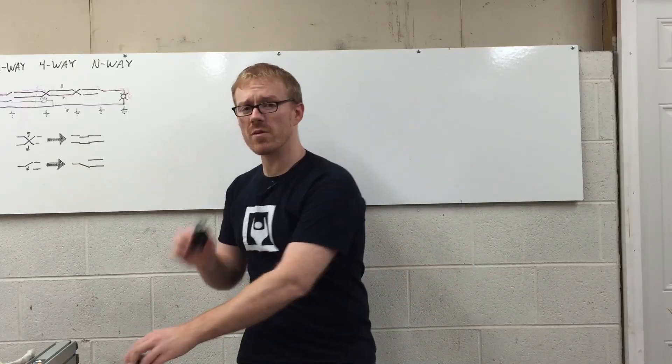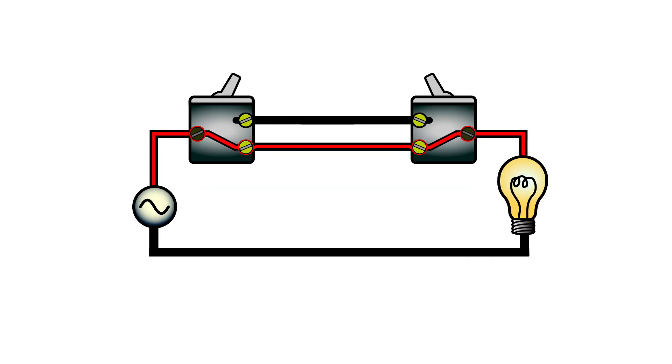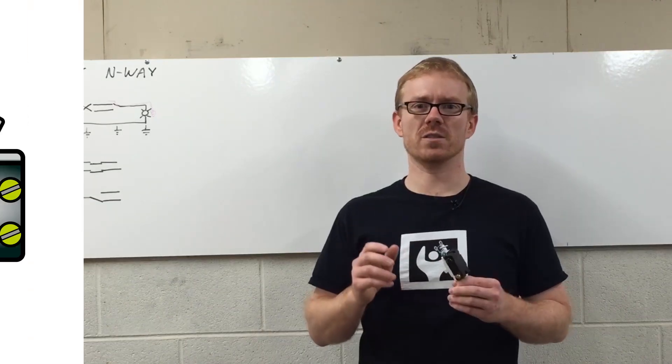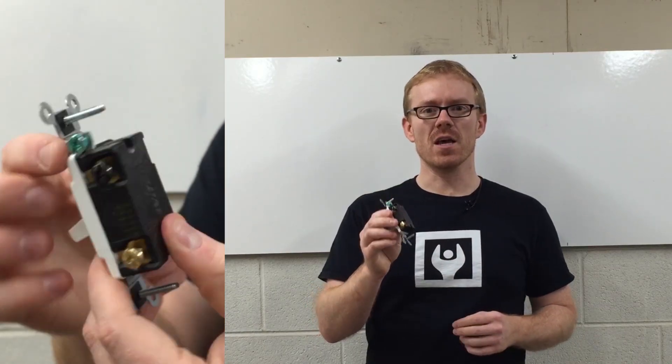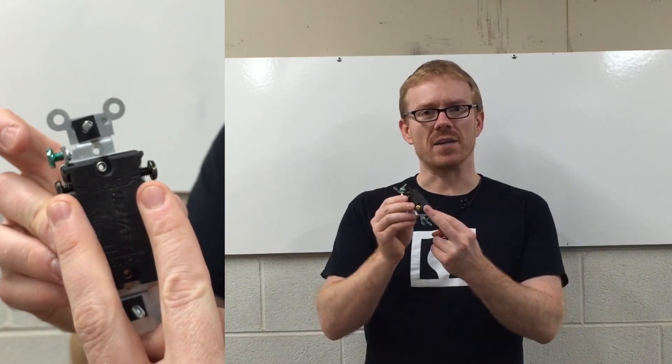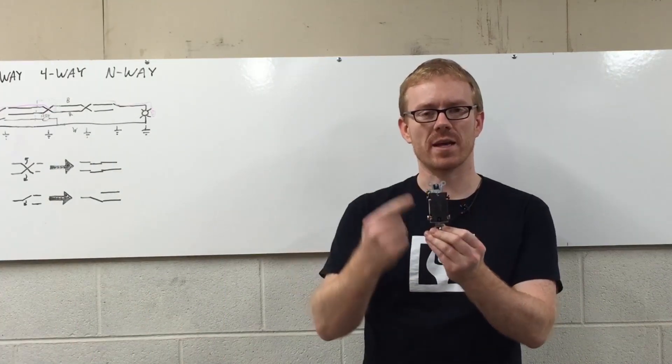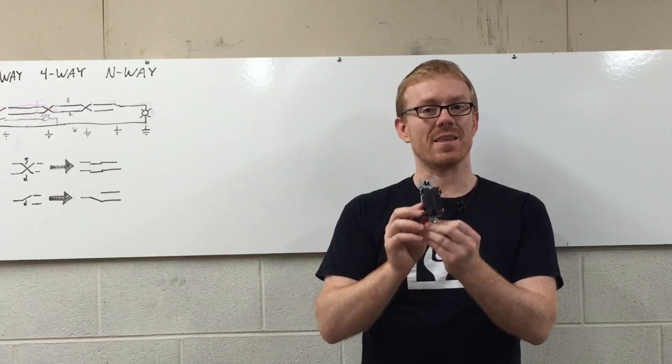The addition of one four-way switch gives you another location from which you can switch the load. A four-way switch works by swapping the connections between the pair of terminals. On the switch that I bought, two of the terminals are black and two of the terminals are gold. With the switch in one configuration, the black terminals are tied directly through to the gold terminals. They go straight through.